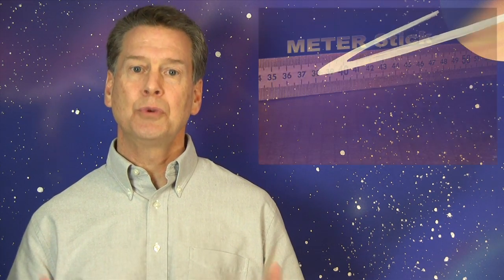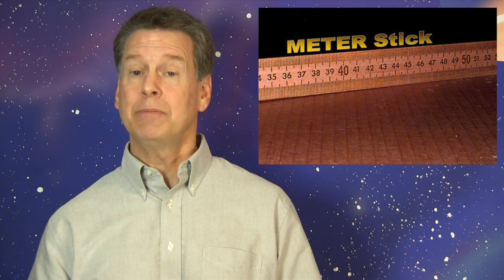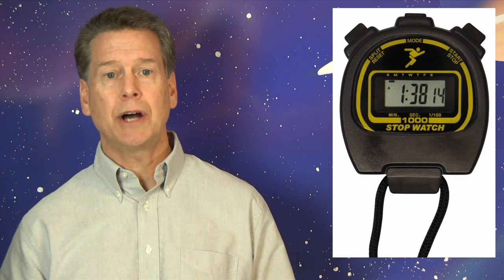Even though distance and time are mysterious, we know how to measure them, and that's crucial. Distance is measured with a ruler or meter stick, and its agreed-upon unit of measurement is the meter. Time is measured with a clock or stopwatch, and its agreed-upon unit is the second.